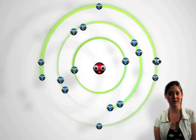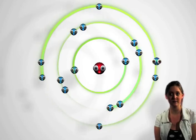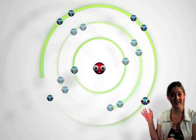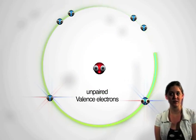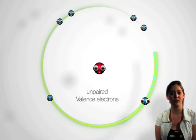For an element to become more stable it needs to fill its outer shell. In the case of oxygen as seen here, it has six valence electrons and therefore its outer orbital is not filled.